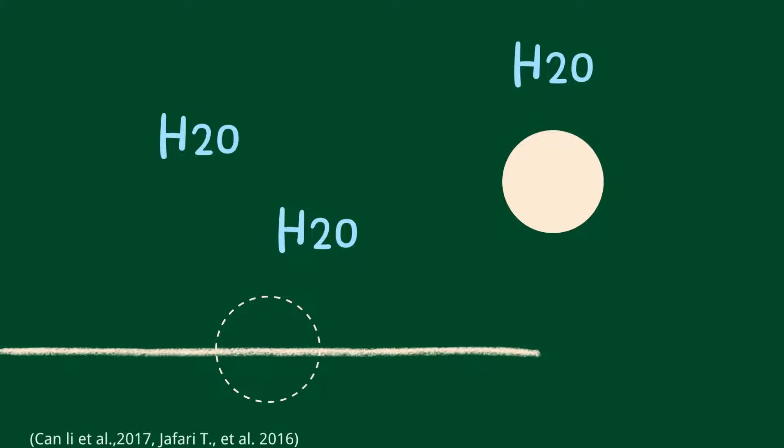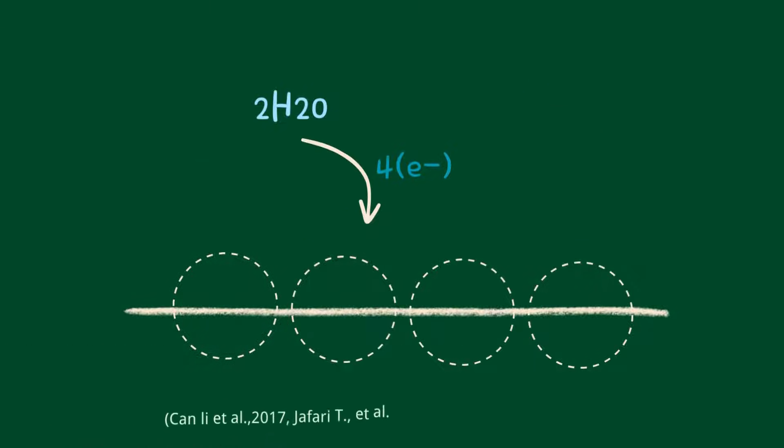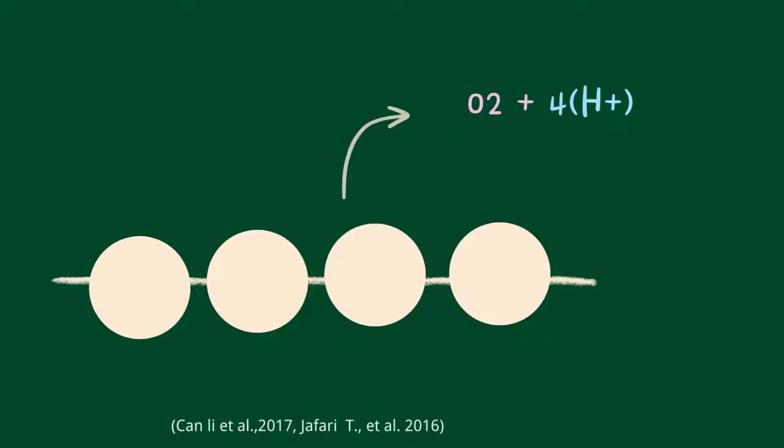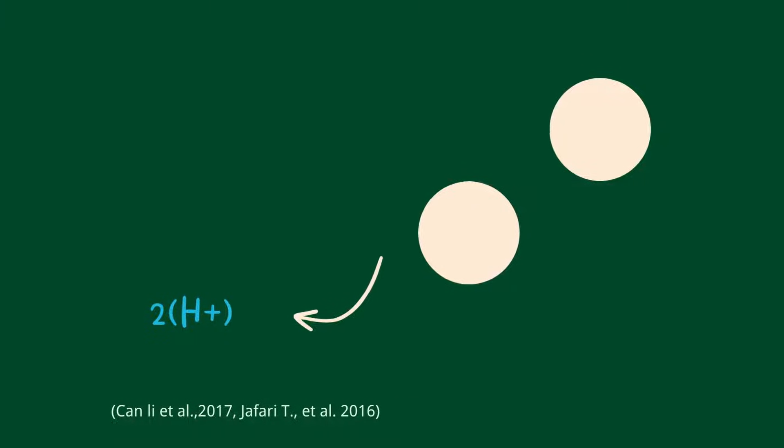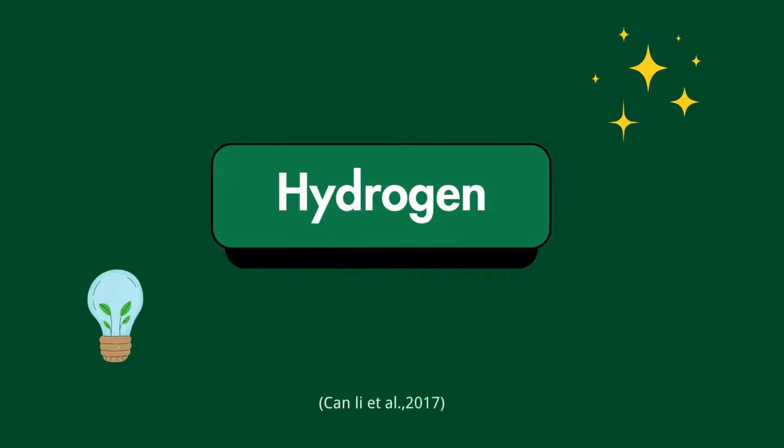Next, the photogenerated electron and the hole migrate to the surface of the semiconductor and react with water. The holes gain electrons from water molecules, generating oxygen and H-plus ions. The electrons combine with the H-plus ions present in water to form our desired product, hydrogen.